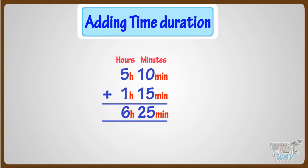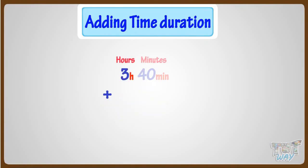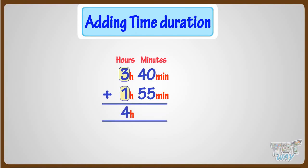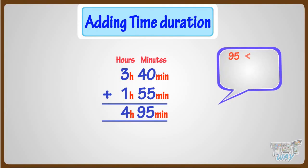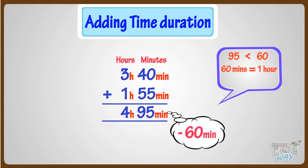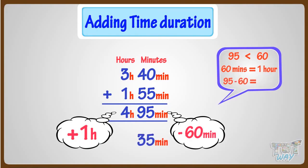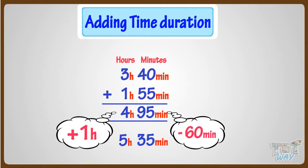Let's take another example. We have to add 3 hours 40 minutes to 1 hour 55 minutes. Adding hours, we get 4 hours, and adding minutes, we get 40 plus 55 equals 95 minutes. Here the minutes are more than 60, and we know 60 minutes make an hour. So subtract 60 from minutes and add 1 to hours. So 95 minus 60 equals 35 minutes, and adding 1 to hours, we get 5 hours. So our answer is 5 hours 35 minutes.